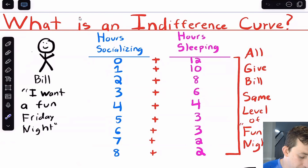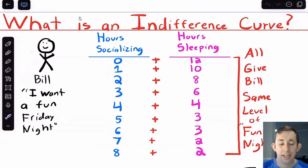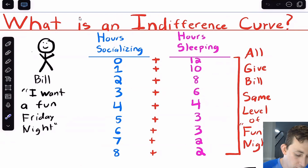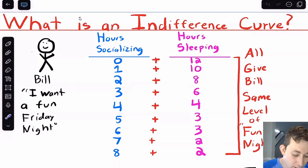Let's take a motivating example with Bill. Bill is in college trying to decide what to do with his Friday night — he wants to have a certain amount of fun. He can choose amounts of two different things: he can socialize and he can sleep. Bill is figuring out how many hours to socialize and how many hours to sleep. On this table, all the different combinations give Bill the same amount of fun on his Friday night.